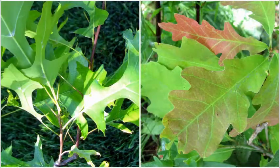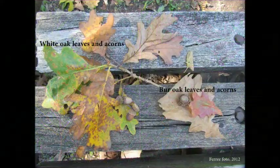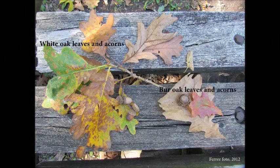Oaks have two main groups. The white oak group's leaves have rounded edges like you see on the right, while the red oak group's have pointed leaf edges like you see on the left. The first two oaks are the white oak group with rounded edges. They are white oak and bur oak.